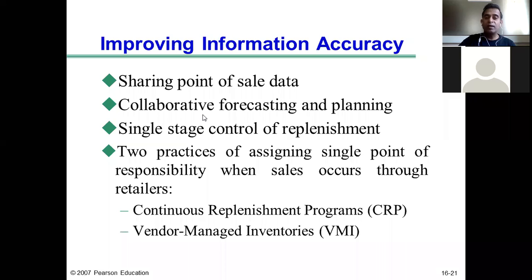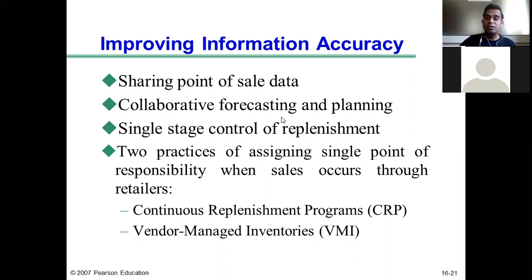The second aspect is collaborative forecasting and planning. If Walmart and Procter & Gamble come together and make a forecast, remember that aggregate forecasts are always more accurate compared to disaggregate forecasts, and Walmart will have real-time demand data for Procter & Gamble's products. Another company that does collaborative forecasting and planning is Dell Computers. Dell shares real-time incoming demand data for its personal computers as well as inventory levels of all Intel components with Intel, so that Intel can use the data in its forecasting.